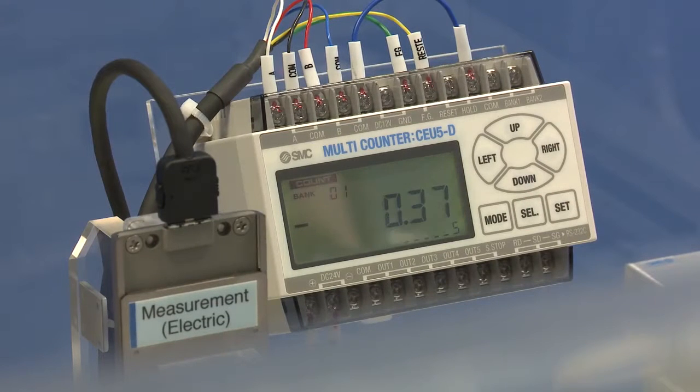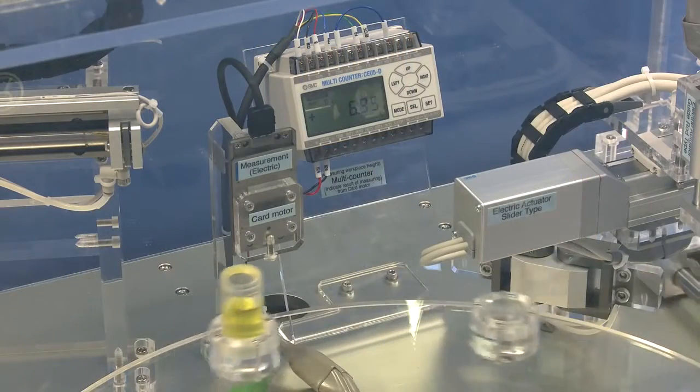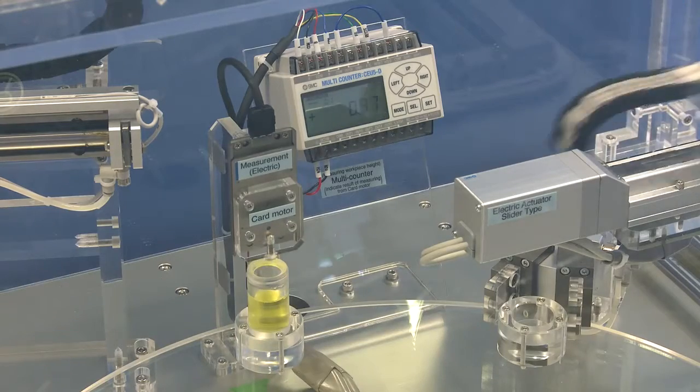Our first station is a measuring system, which is using our LAT card motor. That allows us up to 10 microns of measurement accuracy, and it's fed into our counter here, and that's showing the measurement distance of each product as they go round.